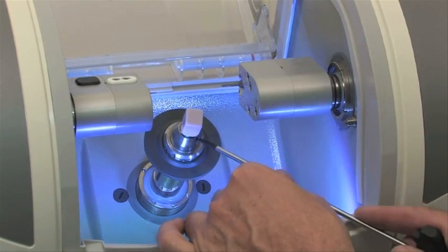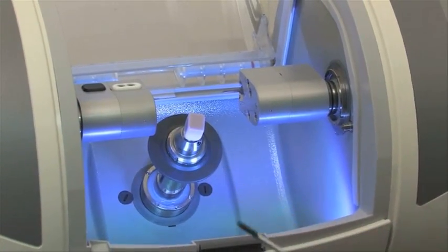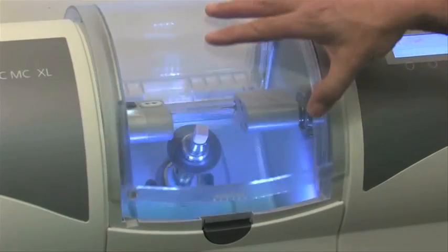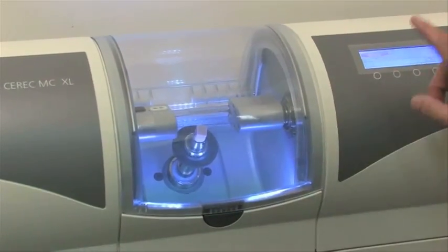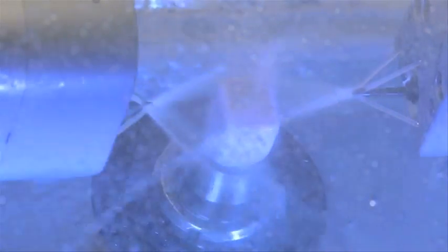The Emax porcelain blue block is installed. Many preliminary measurements are made by the two opposing milling burrs which will cut out the newly created restoration from the center of the block. Water is used as a cooling agent to aid the precision cutting.